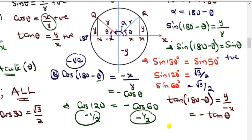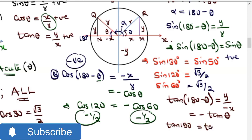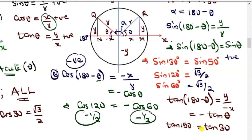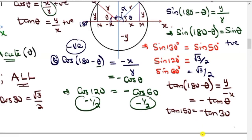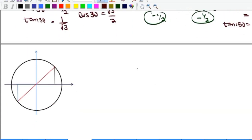So for example, tan 150: since 150 is in the second quadrant, subtract from 180 to get 30, then take the negative — giving negative tan 30. Your four-figure table only has angles from 0 to 90, so for any obtuse angle, subtract it from 180 and take the negative to get the answer for cosine and tangent.